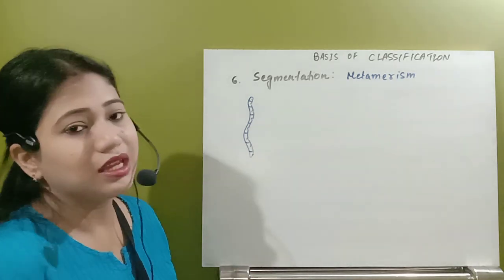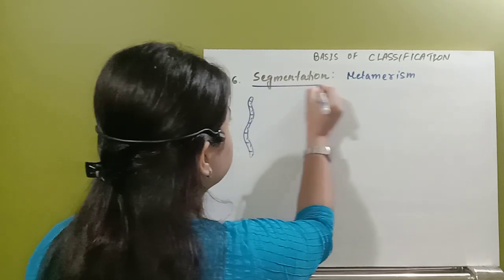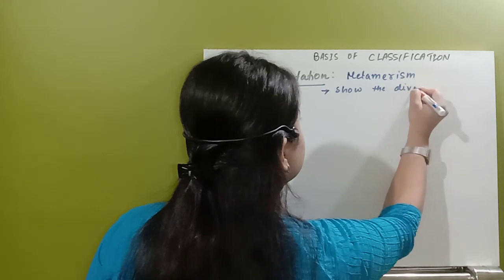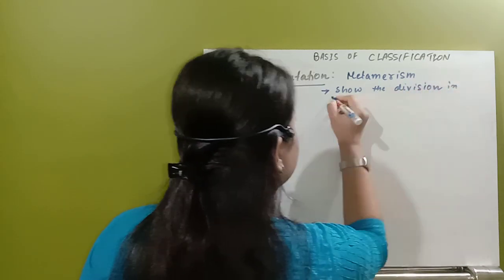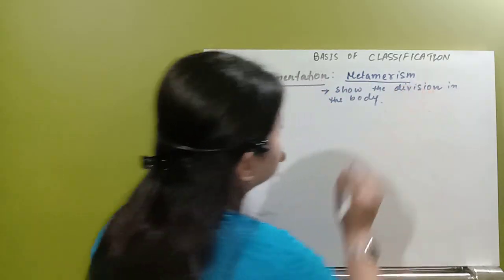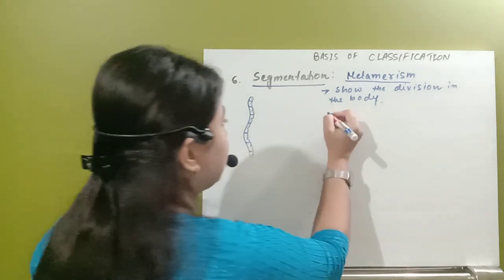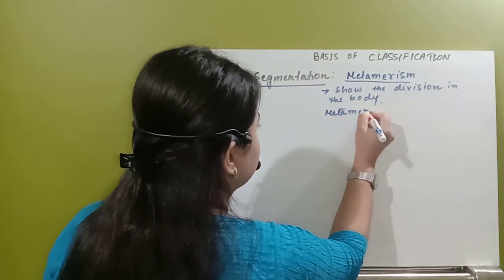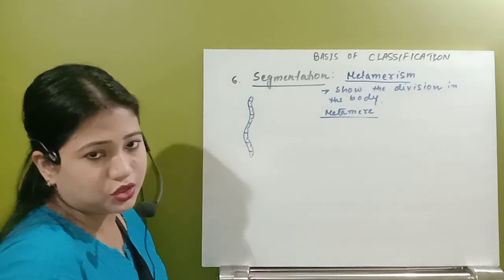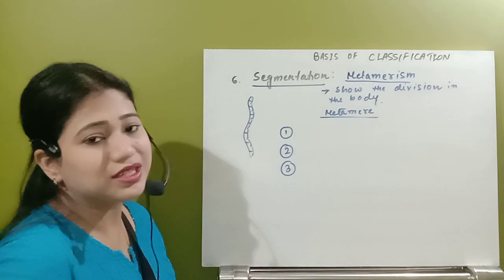Those organisms which show segmentation are known as the metamerically segmented animals. Just see how many types of animals show this segmentation - truly segmented animals. Segmentation means those organisms show divisions in the body. They are called segmented animals. This segmentation is also known as metamerism, and those segments are also known as metameres. In the animal kingdom, we have only three phyla which show segmentation.